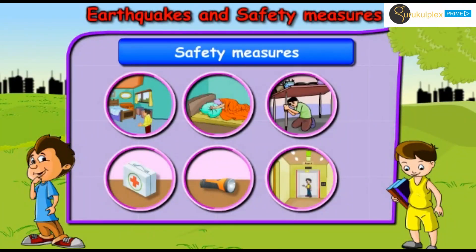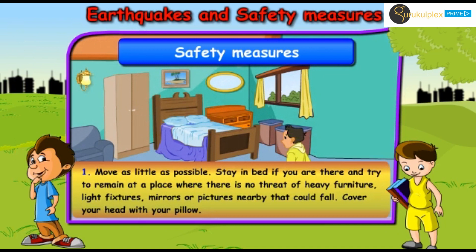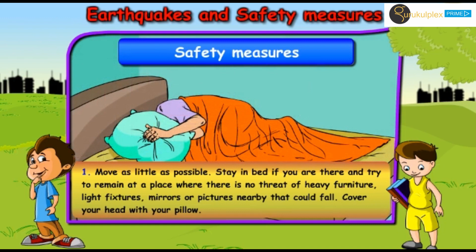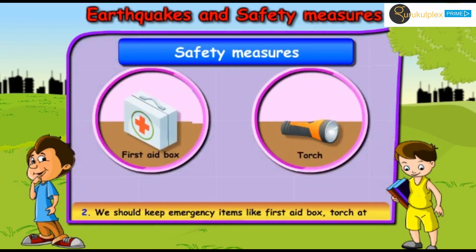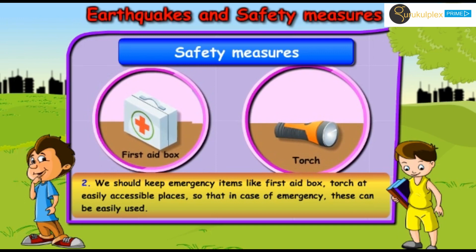Now let us learn about some of the safety precautions one can take during an earthquake. First, move as little as possible — stay in bed if you are there, and try to remain in one place where there is no threat of heavy furniture, light fixtures, mirrors, or pictures nearby that could fall. Cover your head with your pillow. Keep emergency items like a first aid box and torch at easily accessible places so that in case of emergency, these can be quickly used.